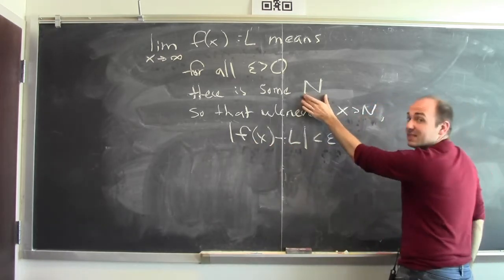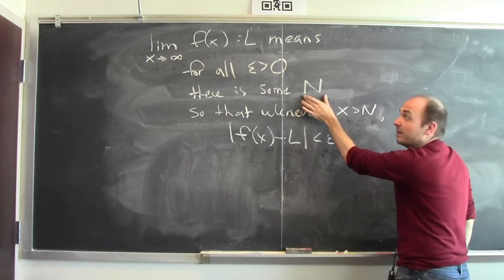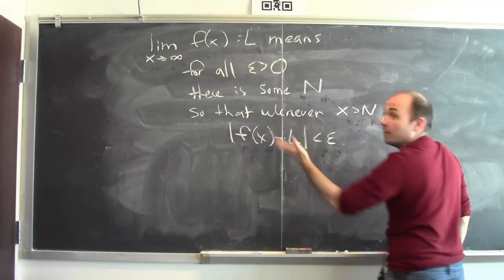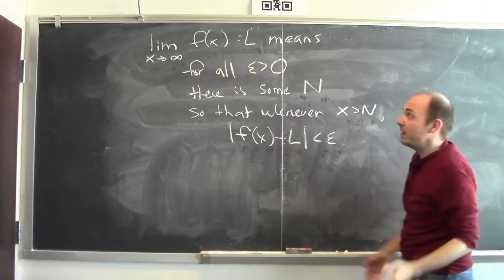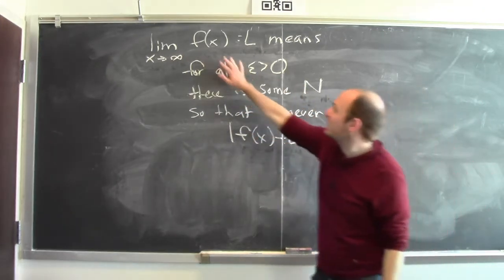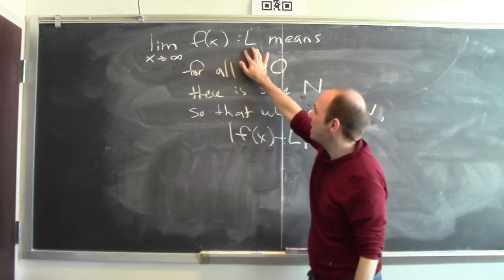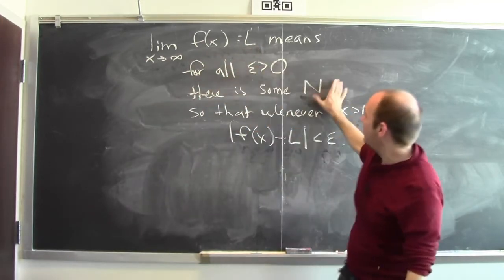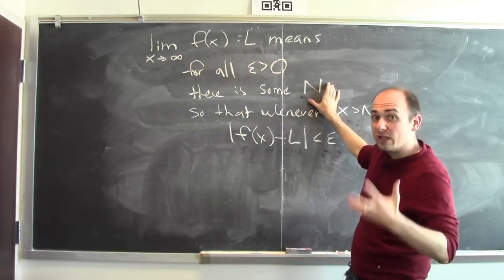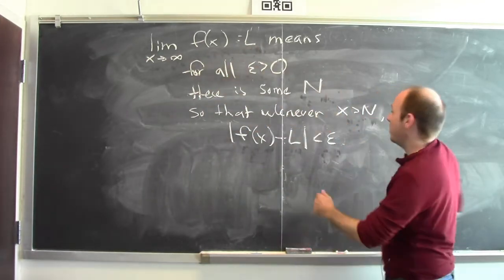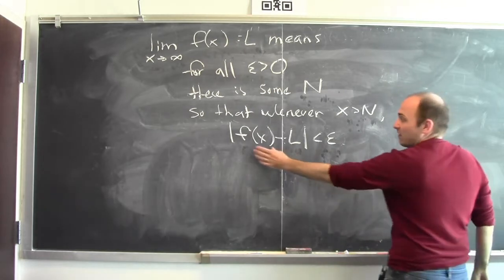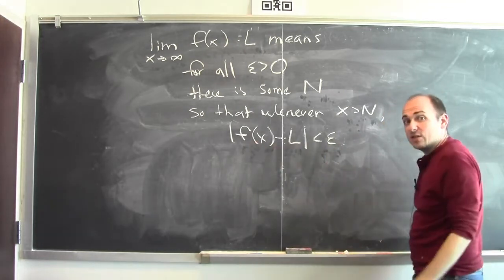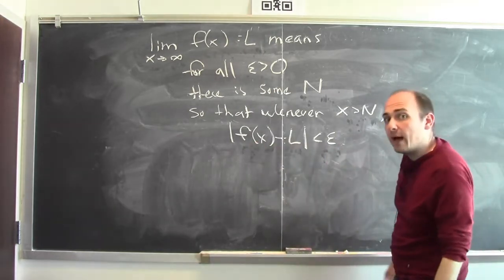So I can make f of x within epsilon of L provided x is big enough. How big? Well, that's this N. And N, of course, will depend upon epsilon. If you want f of x to be really close to L, then I'll probably have to make N really big in order to guarantee that f of x is really as close as you want to L.